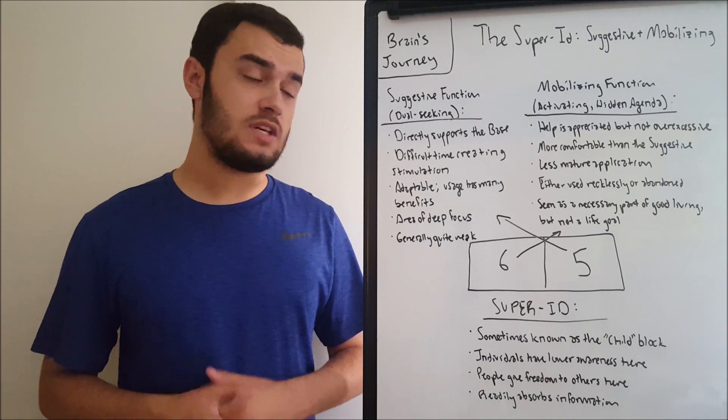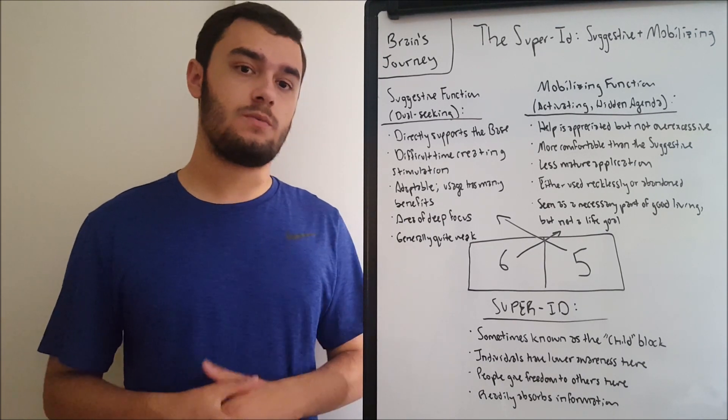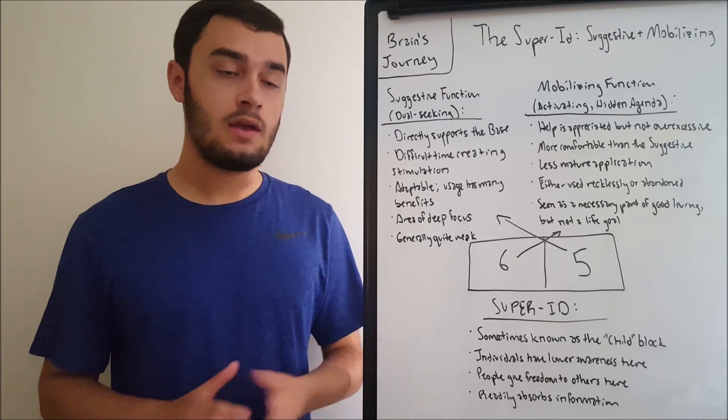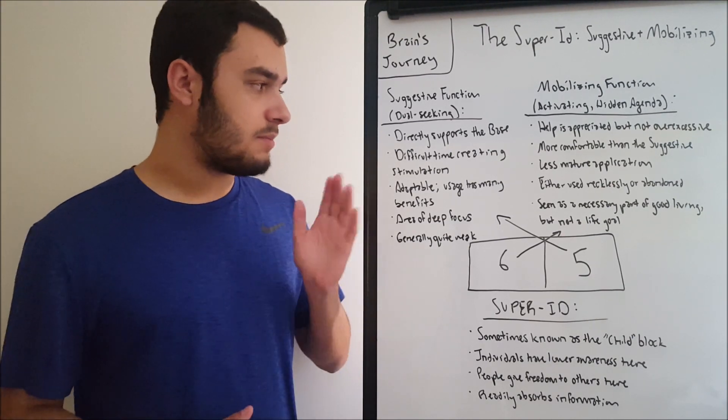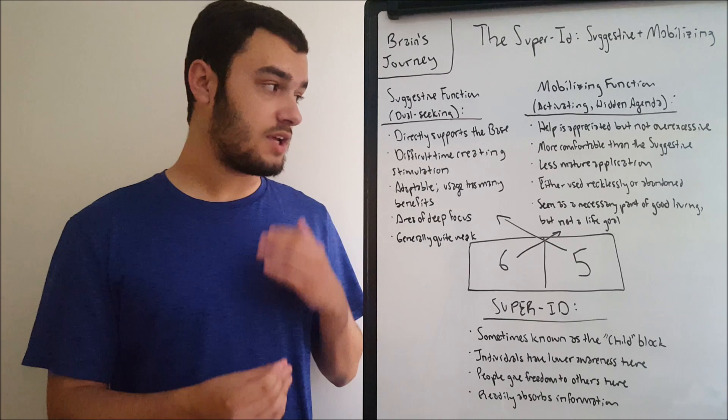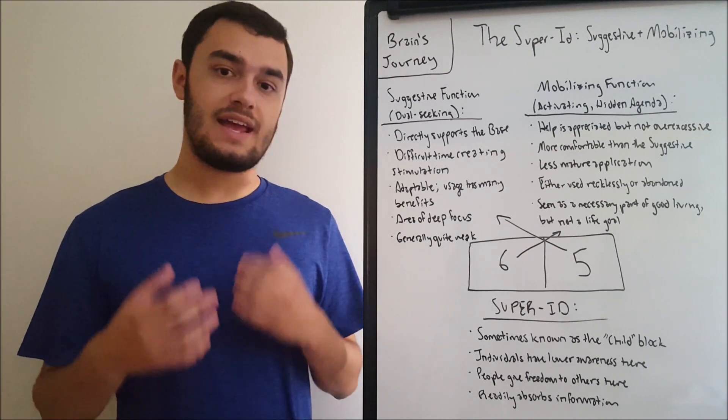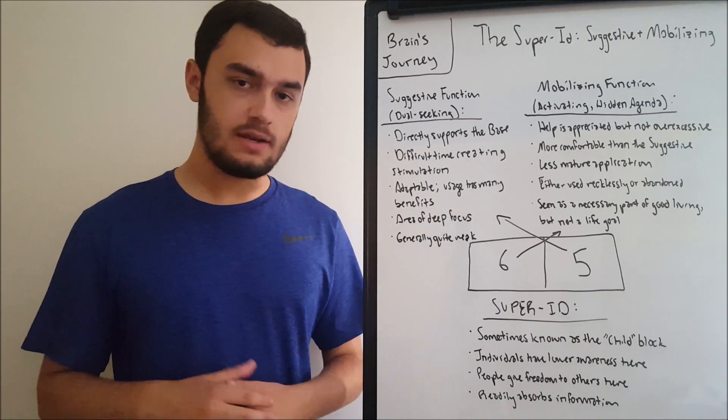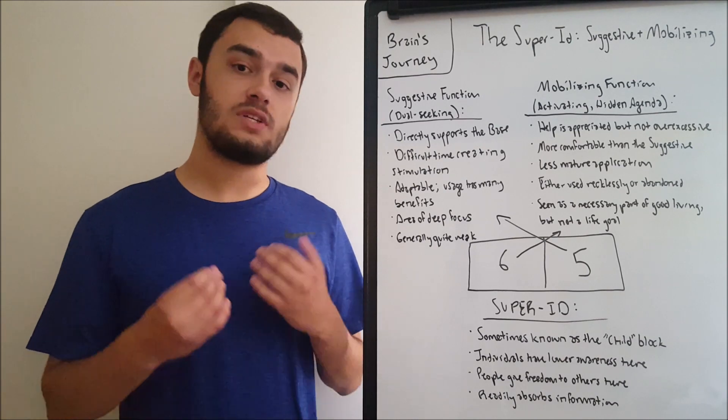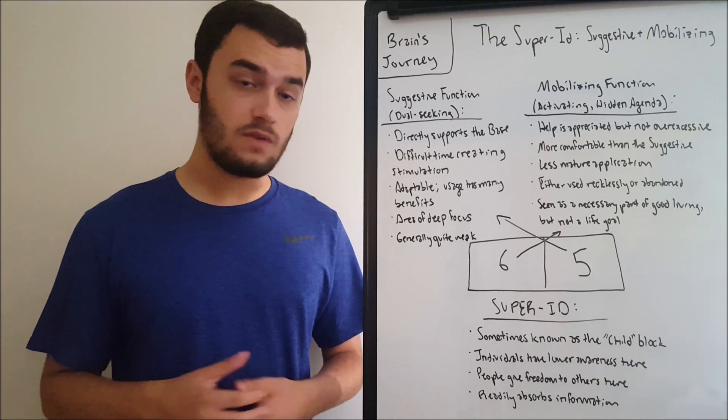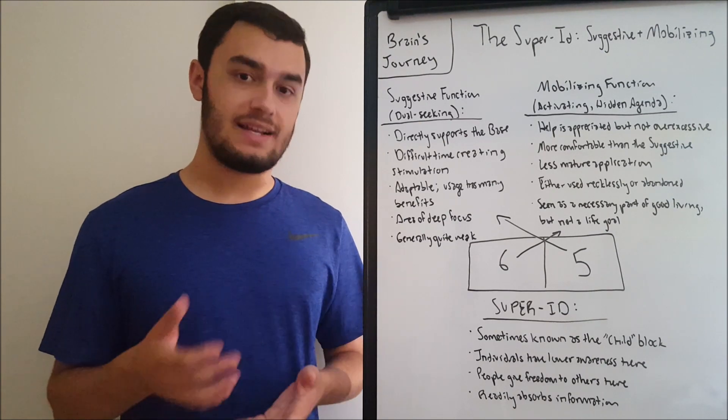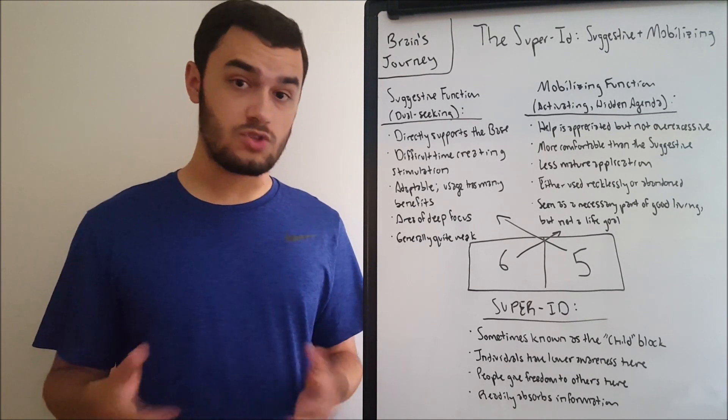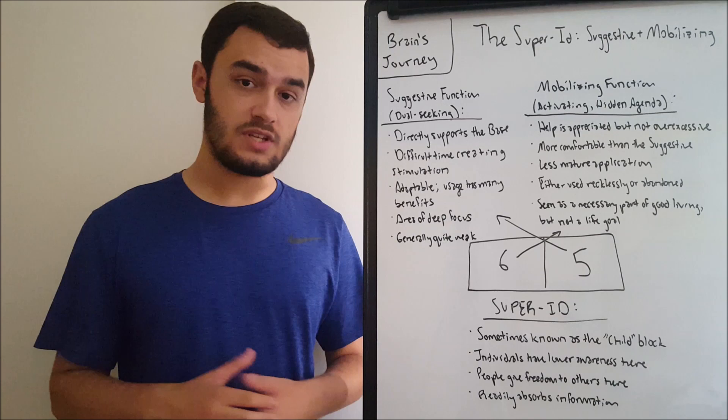The suggestive function, you may also see it called the dual seeking function for reasons that we'll explain way down the line. But what is the suggestive function? Basically, the suggestive function directly supports the base. It's an area where we are very weak, an area that we have trouble producing activity in ourselves, but once we can get it going, it directly supports the base and its activities in our life goals, our core values, what we project to others.